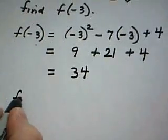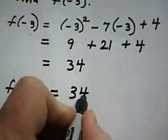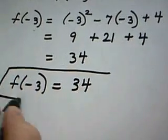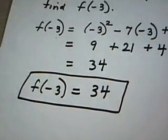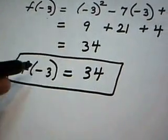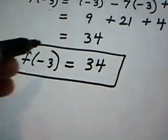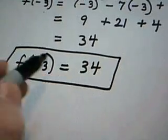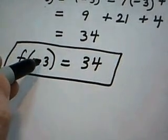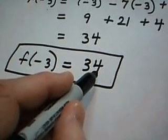Therefore, f of negative 3 is equal to 34. And again, what this means, even though the final answer is 34, I want you to know what we did. What this means is, when we plug negative 3 into this function, we get out the answer 34. Another way of saying this is, when negative 3 goes in as a domain value, 34 comes out as the range value.